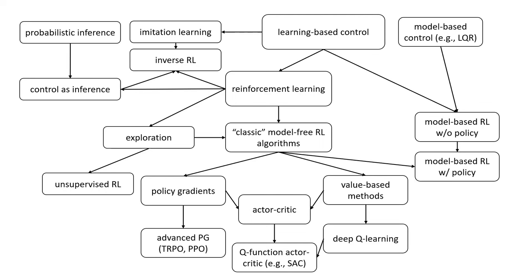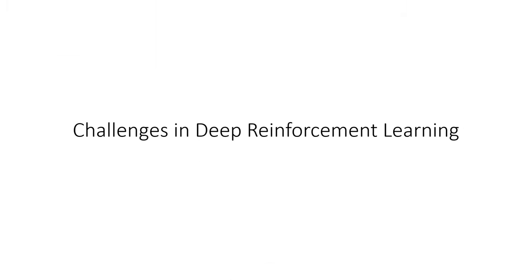This doesn't fully cover every single thing we discussed — we also covered sequence models, POMDPs, etc. — but this gives a rough overview. What I'd like to talk about today are some of the challenges with deep reinforcement learning methods, basically the things that are open problems we have not yet addressed, and also some perspectives about how deep reinforcement learning should be used. Some of you might already be familiar with quite a few of these challenges from having done the homeworks.